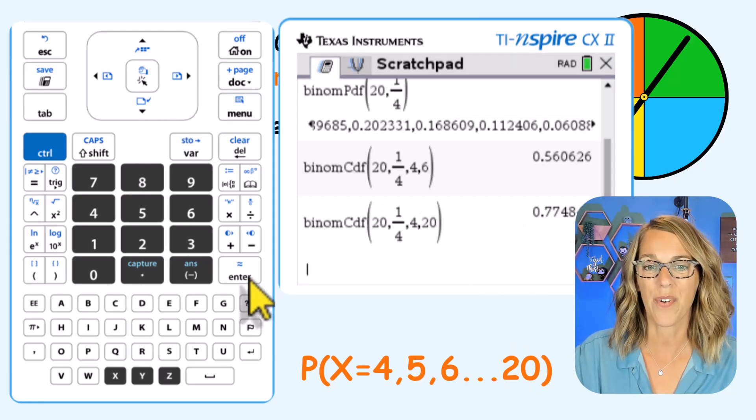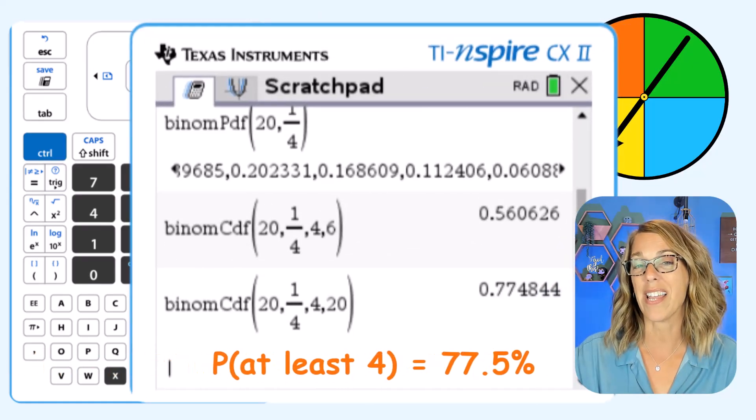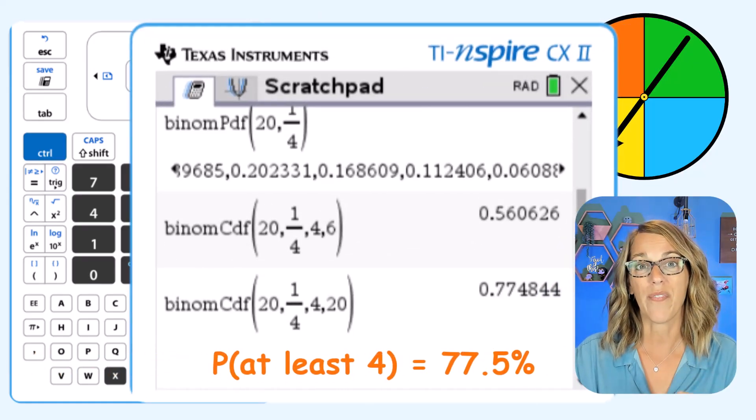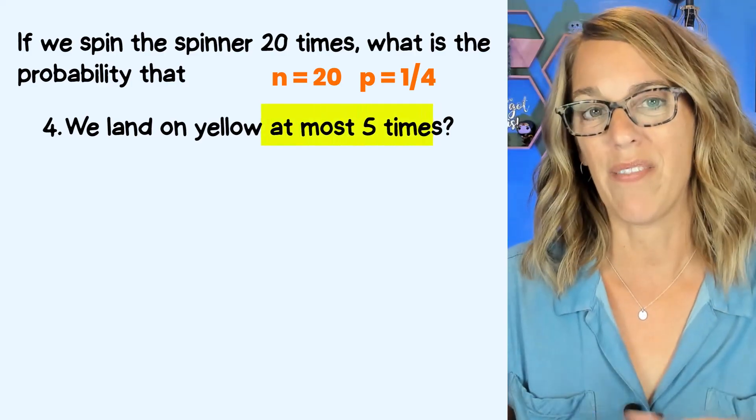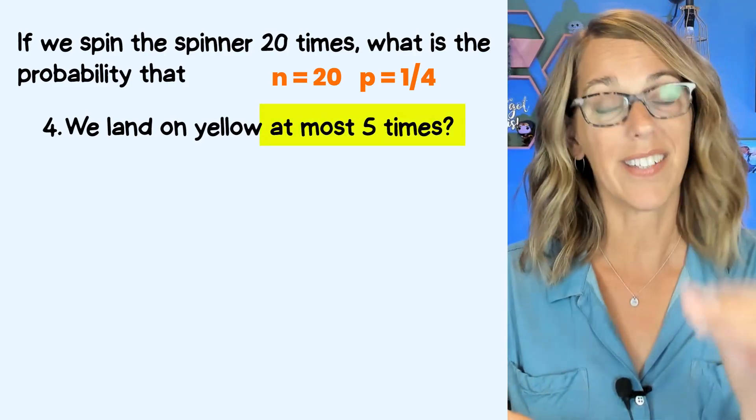Let's hit enter for okay, and we end up with 77.48, about 77.5%. The last one is at most five times. So five would be the highest number that we could get.